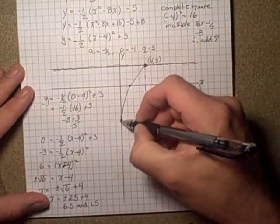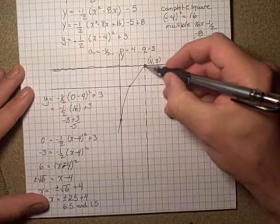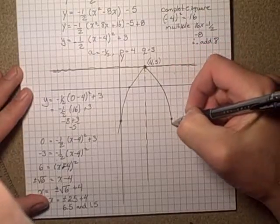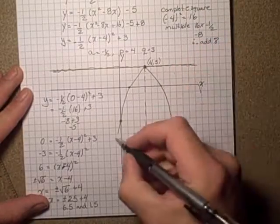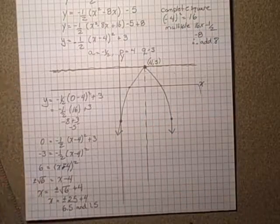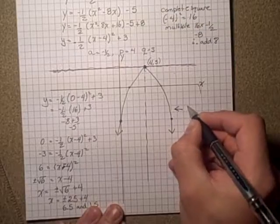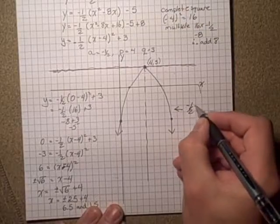For our parabola or our quadratic equation here, and we can see that it is wider than normal, and it is going down, and we have our points there.